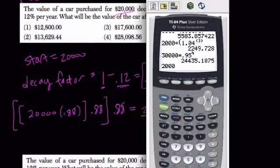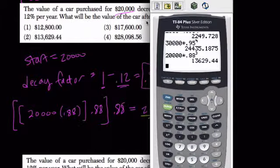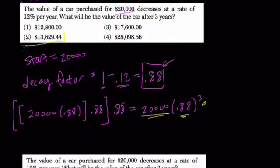So we can set that up as 20,000 times 0.88 to the third power. That's 13,629.44, or choice two.